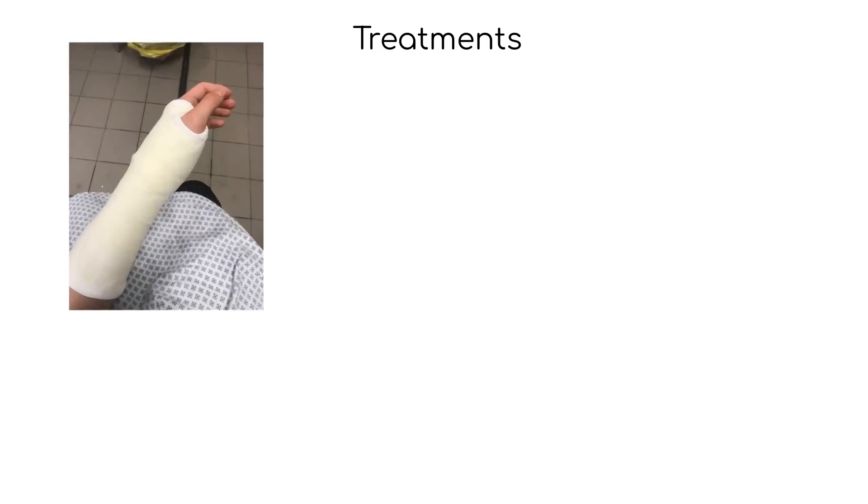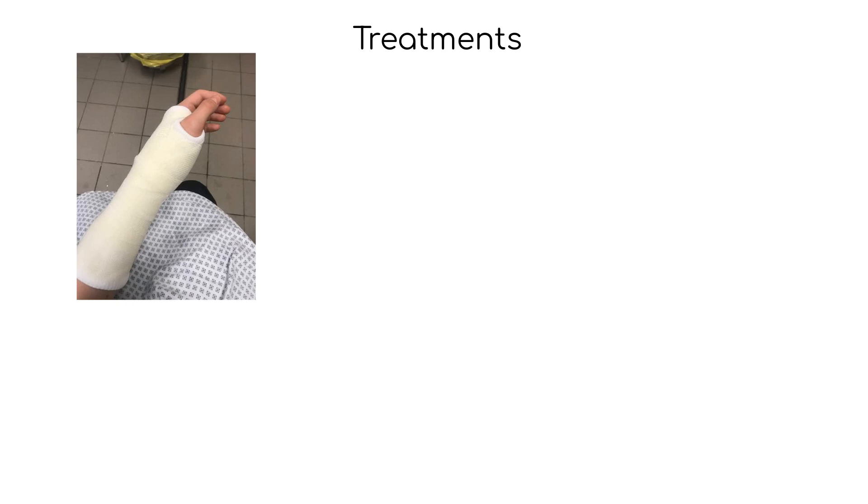Bone fractures can be treated in several ways depending on the severity of the injury. The main types of treatment include immobilization, which involves keeping the affected bone in a fixed position to allow it to heal. This can be done through the use of a cast, brace, or splint.